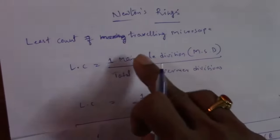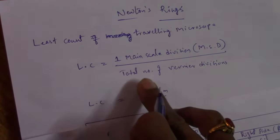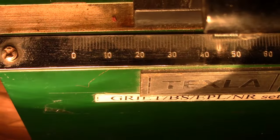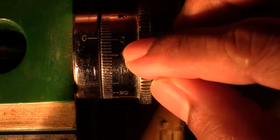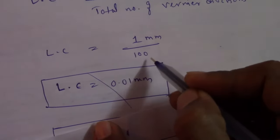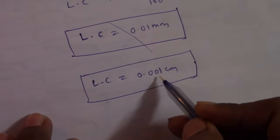Let me explain how to calculate the least count of the traveling microscope. The formula is: LC equals 1 main scale division (MSD) divided by the total number of vernier divisions. One main scale division is 1 millimeter and the number of divisions on the vernier scale is 100. So LC equals 1 millimeter divided by 100, which is 0.01 millimeter, and converted to centimeters this is 0.001 centimeters.